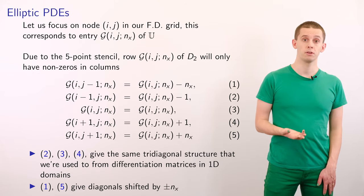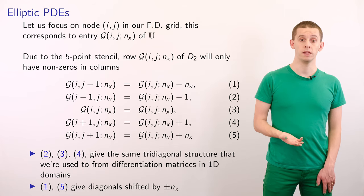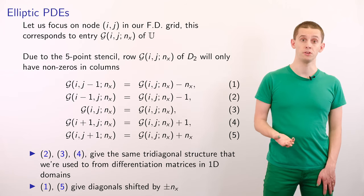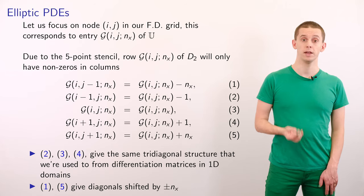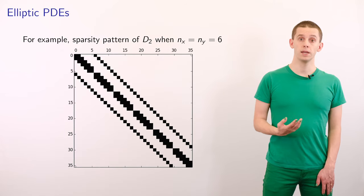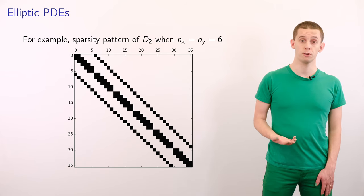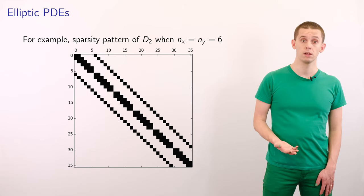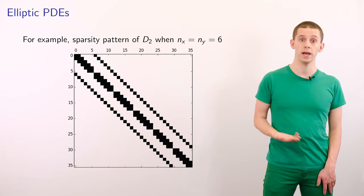Hence if we look at the displacements of minus 1 and 0 and 1 then that will give us a tri-diagonal structure that we're used to for differentiating matrices in 1d domains. But the displacements due to minus nx and nx will give us diagonals that are shifted by plus or minus nx. So if we now look at our matrix D2 for the case when nx and ny equal 6 then we have the following sparsity pattern. And we see that there are then five diagonals, and we see certain terms are missing and they correspond to cases when our neighbours of a grid point might be out of range of the grid.